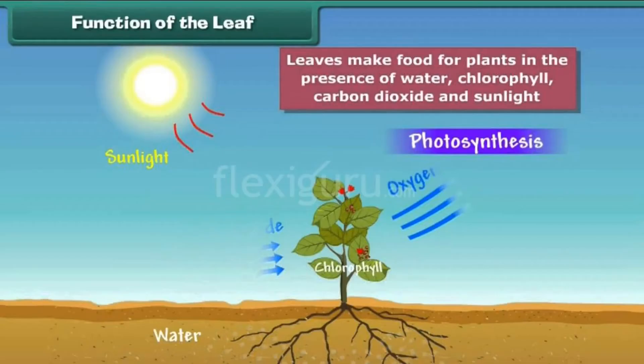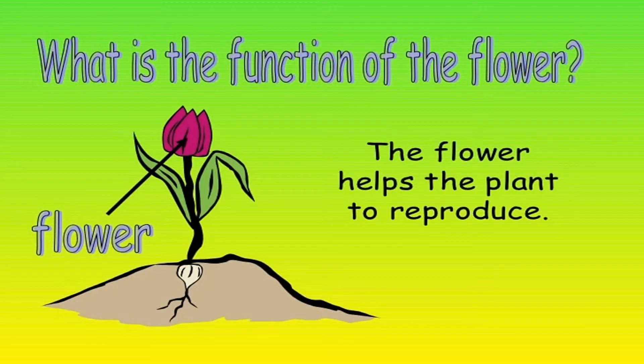Functions of leaf: leaves make food for plants in the presence of water, chlorophyll, carbon dioxide, and sunlight.